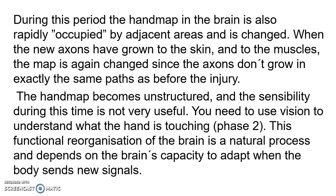The patient will naturally use other senses — mainly vision — to understand what the hand is touching, and then relate that to the old sensation they had before. In Phase 2, this functional reorganization of the brain is a natural process that depends on the brain's capacity to adapt when the body sends new signals. The person uses all other sensations to understand the new, recovering, abnormal sensation being perceived.